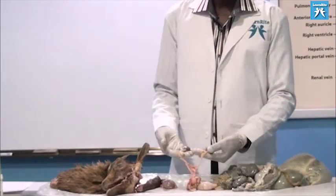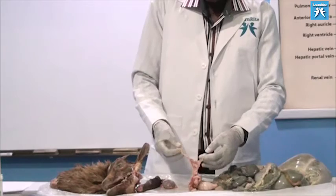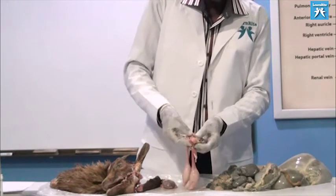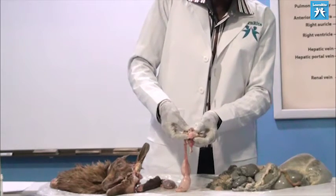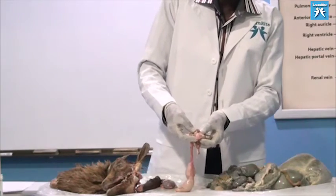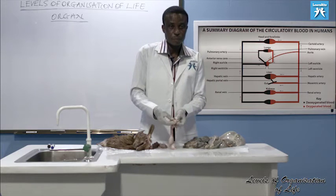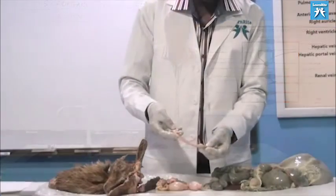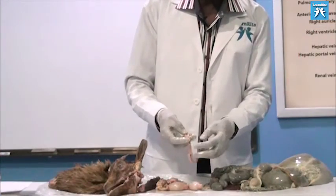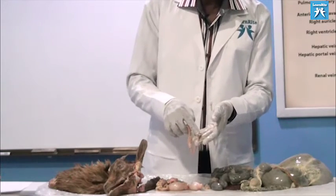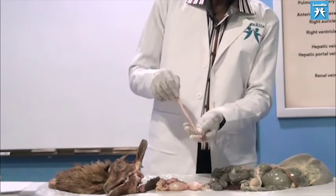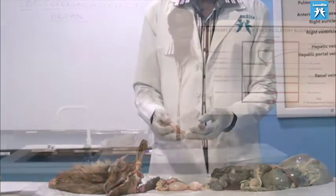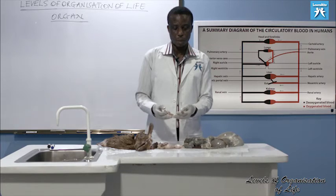The ureter transports urine to the urinary bladder. The urinary bladder stores urine temporarily. Then from the bladder, urine passes through the urethra, which runs through the penis to the outside — that is where the goat urinates. These are all organs in the goat.